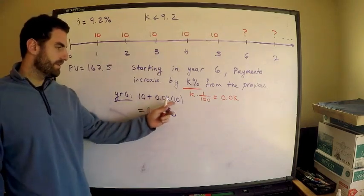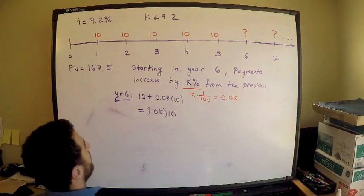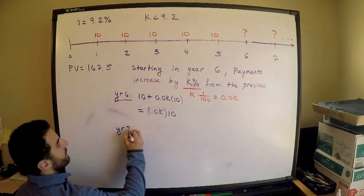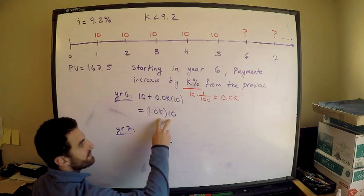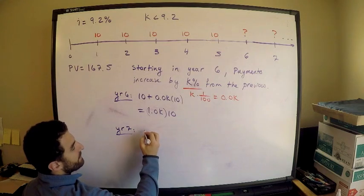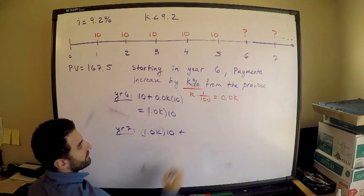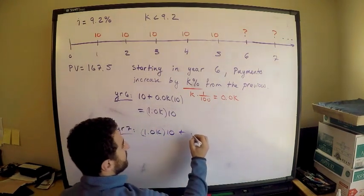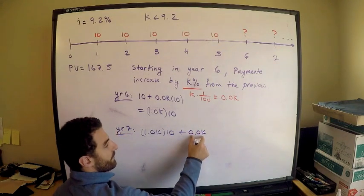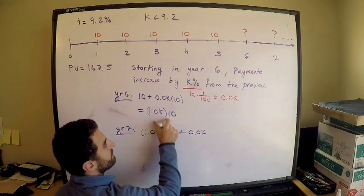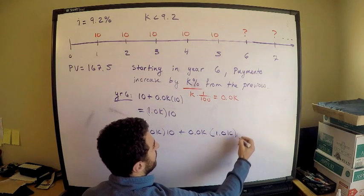Just factor 10 out. What is the payment in year seven? After we get year seven, you'll see the pattern. I need to increase the previous year by K percent. The payment in the previous year is 1.0K times 10. I need to increase that by K percent, so plus 0.0K times the previous year.